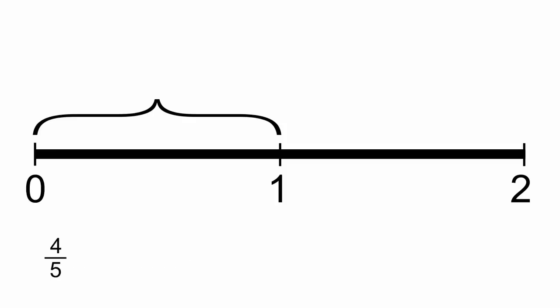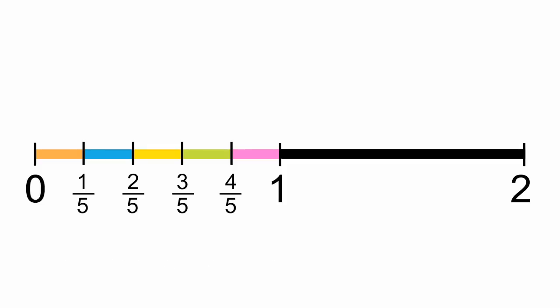So, let's divide this part of the number line into fifths. Now, counting from 0, we have 0, 1 fifth, 2 fifths, 3 fifths, 4 fifths. Here's the location of 4 fifths on our number line.